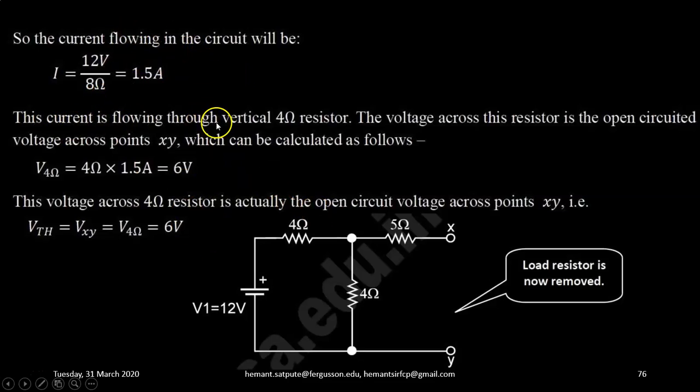Now this current is flowing through the vertical resistance of 4 ohm. So the voltage across this resistor is the open circuited voltage across points X and Y which can be calculated as 4 ohm multiplied by the current which we have calculated that is 1.5 ampere. So 4 into 1.5 ampere that is 6 volt is the voltage across this and that is nothing but the open circuit voltage Vth.